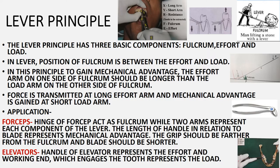Starting with the lever principle: it has three basic components — the fulcrum, the effort arm, and the load arm. The fulcrum is positioned between the load and the effort arm. To gain mechanical advantage, the effort arm must be longer than the load arm, because forces are applied on the effort arm to gain advantage over the load arm.